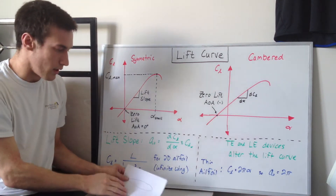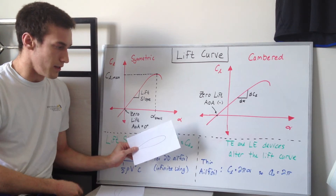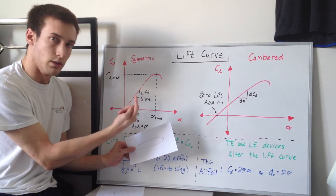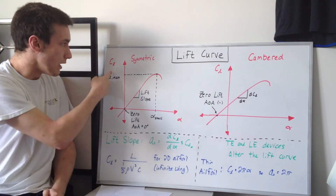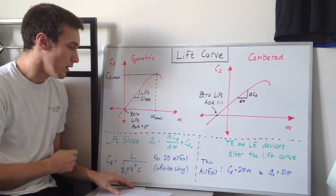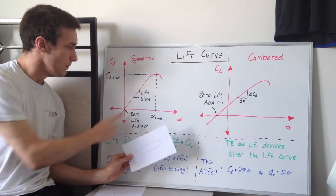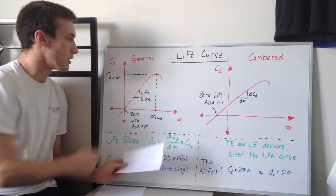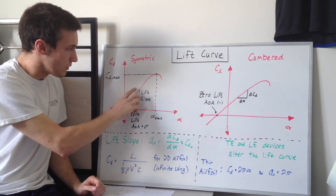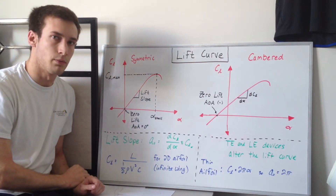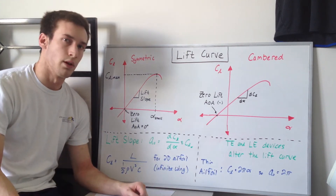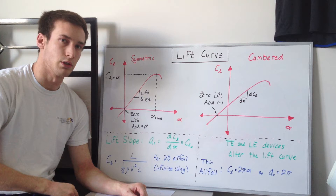As I increase the angle of attack, the pressure distribution over the airfoil changes and we get a net upward lift. The lift increases, which means CL, the lift coefficient, increases. As we move to higher positive angles of attack, we get an increase in the lift coefficient. In this region, it's pretty linear — for smallish angles of attack, as a rule of thumb, the lift curve is actually linear.